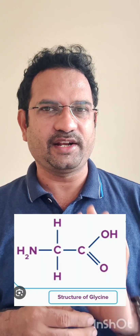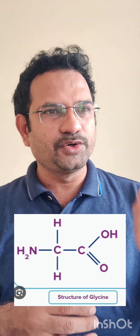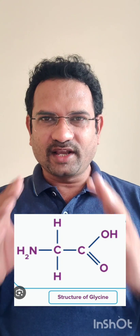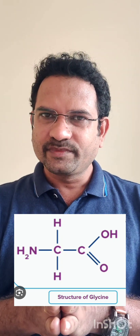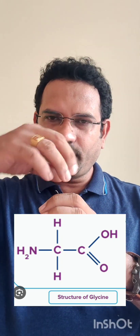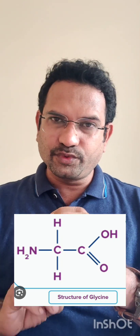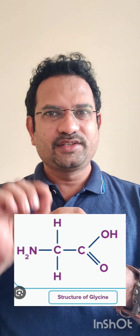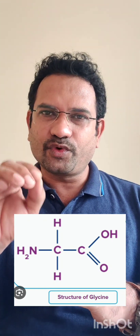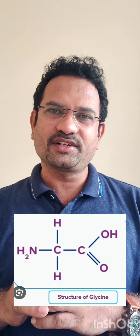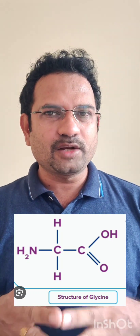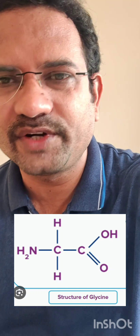Out of the 20 amino acids, there is only one amino acid which is achiral — that is glycine, the simplest amino acid. In glycine's structure, the carbon has an amine group, an acid group, and the remaining two positions are both hydrogens: CH2, NH2, COOH. Because the two remaining groups are identical (both H), it is not a chiral carbon, and therefore shows no optical activity.